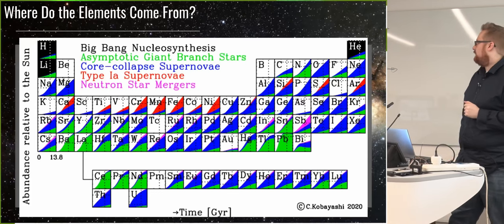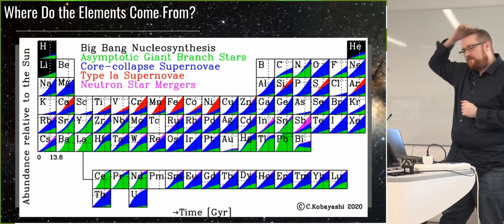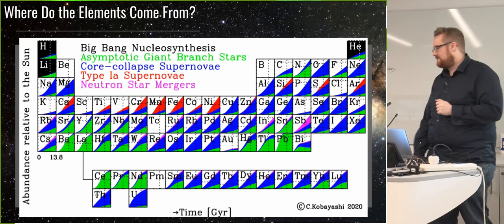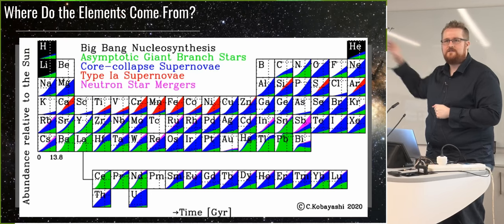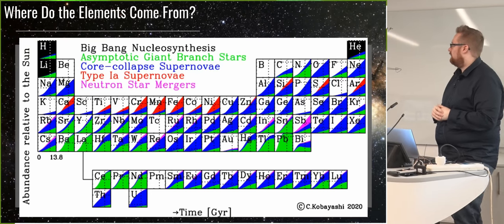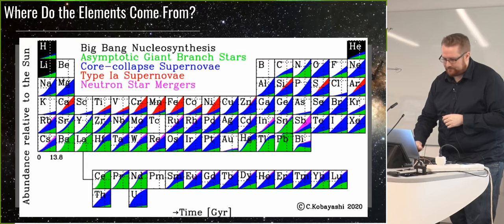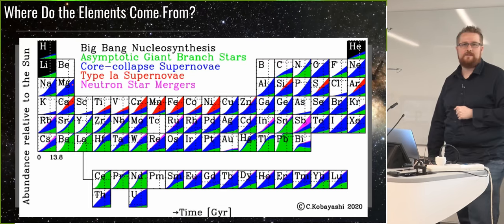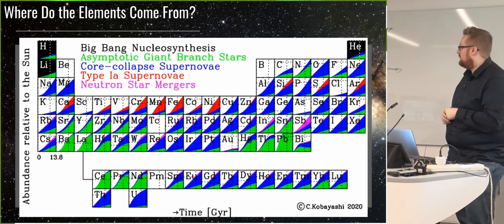So where do the elements come from? This plot underpins all of what we do in galactic archaeology. The key take-home is that all the elements on the periodic table come from different metal production sites, and those production sites happen on different timescales. Magnesium, for instance, is primarily coming from core-collapse supernovae — supernovae from massive stars that explode pretty much instantly after star formation.